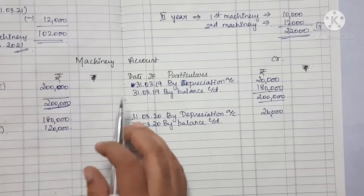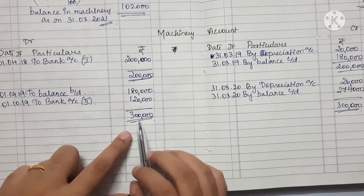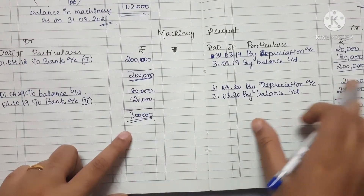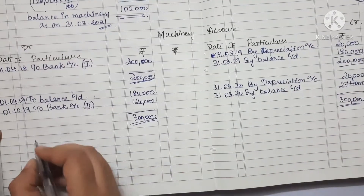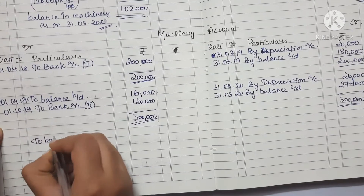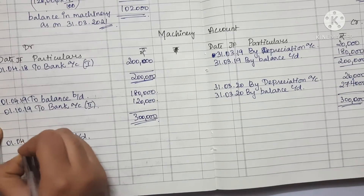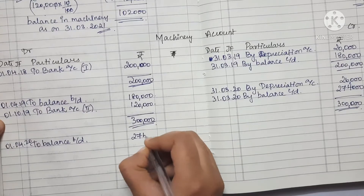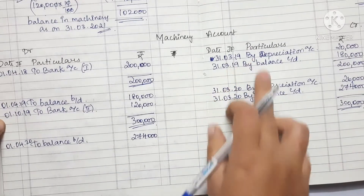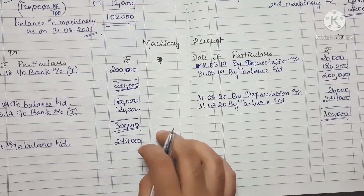Next, we close the depreciation. This is $3,000. $26,000 — the depreciation amount is $2,74,000. Let's put it in. The price is $3,900. We are closing. There is a difference in this — if we go to the last year, it is important. You can get it easier.